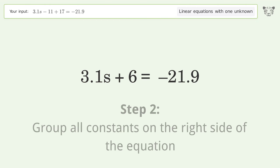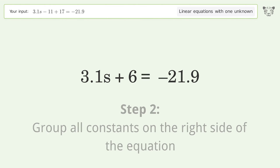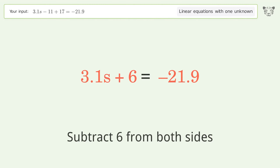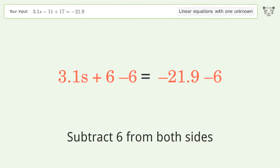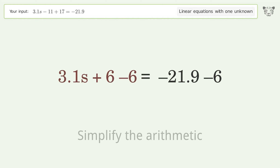Group all constants on the right side of the equation. Subtract 6 from both sides, then simplify the arithmetic.